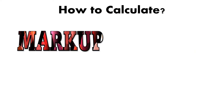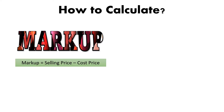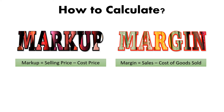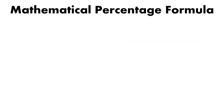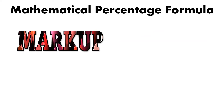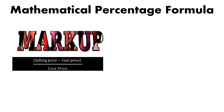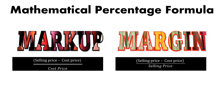How to calculate markup? Markup can be calculated using this formula: Markup is equal to selling price minus cost price. While margin is equal to sales minus cost of goods sold. Remember that the markup and margin amount is the same. But we can see the difference by computing its percentage value. The formula for markup rate is selling price minus cost price divided by cost price, and for margin it is the difference of selling price and cost price divided by selling price.